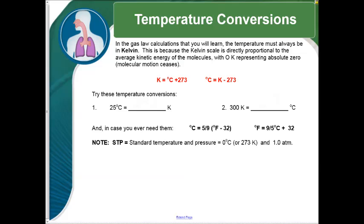All right, the last thing we need to talk about today is temperature conversions. In the gas law calculations that you will learn, the temperature must always be in something called Kelvin. This is because the Kelvin scale is directly proportional to the average kinetic energy of the molecules. Zero Kelvin represents absolute zero, meaning there is no motion at all. Now we will provide you with these two formulas. Kelvin equals your temperature in Celsius plus 273, or your temperature in Celsius is Kelvin minus 273. So for our first practice problem, we are going to convert 25 degrees Celsius to Kelvin. So I need to add 273 degrees to this one to get 298 Kelvin. Working backwards, if I need to convert 300 Kelvin to Celsius, I would subtract 273.